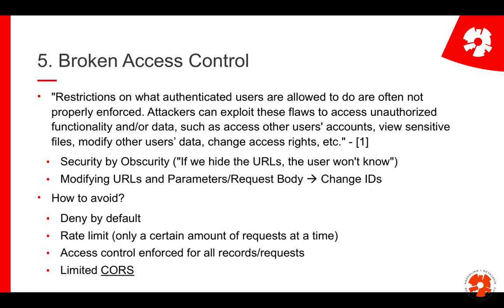Typical cases are security by obscurity — if you enter the right URL, you have access, and people just assume you don't know it. How to avoid this: deny by default — always deny access if someone doesn't have the rights. Rate limiting is another one — only allow a certain number of requests per time, then deny access, ensuring people cannot try out whatever they want. Whenever you have endpoints for get, read, or write, make sure you have access control checking both authentication and authorization. And finally, you should limit CORS if you can.